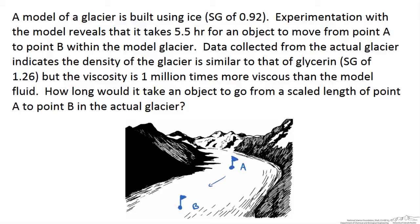Let's imagine we come across a glacier, we build a model of this glacier in a lab, and so the model is out of ice with a specific gravity of 0.92. Through experimentation we find that it takes 5.5 hours for an object to move from one point in the model to another point. Data collected from the actual glacier indicates that the density of the glacier is similar to that of glycerin, so specific gravity of 1.26, but is a million times more viscous than the fluid we use in our model. We want to know how long would it actually take in the actual glacier to move from a scaled length point A to point B.